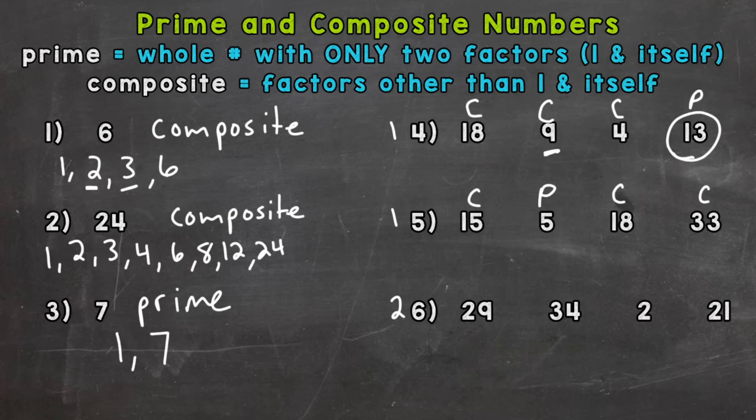And number six, we have two prime numbers here. The first one being this twenty-nine. The only factors of twenty-nine are one and twenty-nine. So we have a prime number here. Thirty-four is even. So we know that it's going to have more than just one and itself. So we have one, thirty-four, two, and seventeen. So thirty-four is composite.